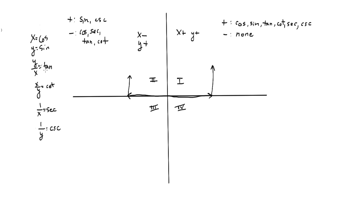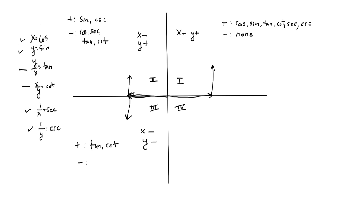In quadrant three, x is still negative but y is also negative. The only thing that gives a positive value is when I have x over y or y over x, because I'll have a negative divided by a negative. So tan and cotan are positive. All the rest have either an x or a y with nothing to balance it, so cosine, sine, and their reciprocals secant and cosecant are all negative.